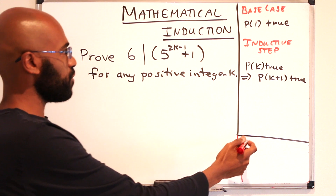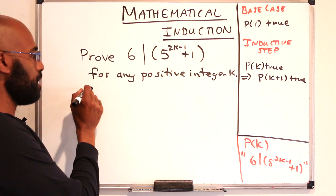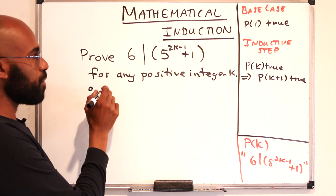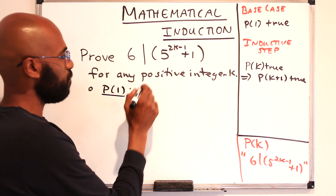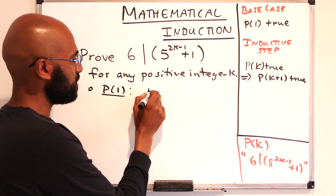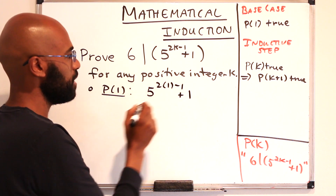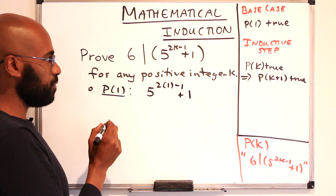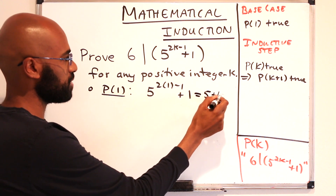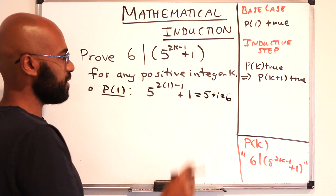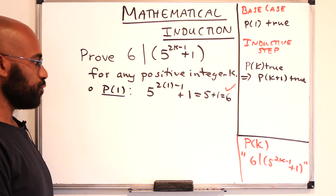Let's create a statement p of k that says precisely this. Going through the process, we want to first prove that p of 1 is true. p of 1 would be saying that 5 to the exponent 2 times 1 minus 1 plus 1 is divisible by 6. This quantity is 5 plus 1, which is 6, and 6 is definitely divisible by 6, so that statement is true.